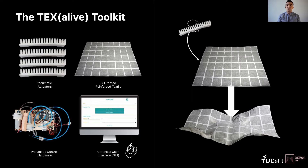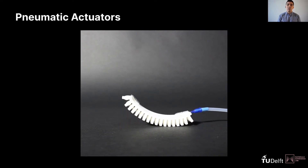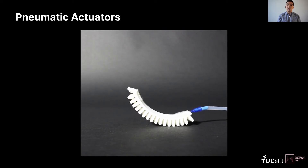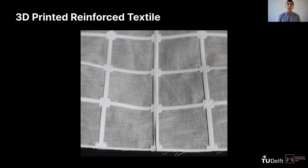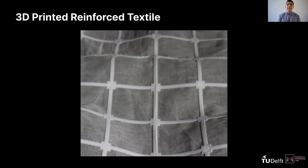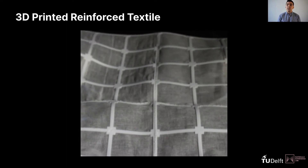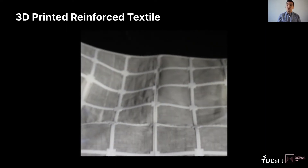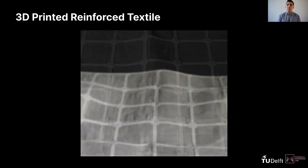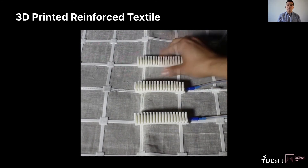I will now discuss the individual components of the toolkit in more detail. First, we have the pneumatic actuators — multiple bending actuators inspired by dosing soft robotic hands. The actuators were 3D printed with NinjaFlex TPU85A on an Ultimaker 3, which proved to be an accessible and quick method to produce reliable actuators. Next, we have the 3D printed reinforced textile, which functions as the medium of interaction between the shape change and the user. The textile consists of 100% undyed woven cotton, and a 3D printed rectangular grid printed directly on the textile using Ultimaker TPU95A on an Ultimaker 5. This rectangular grid reinforces the soft textile to intensify shape changes and provide connection points for the actuator via Velcro adhesive.